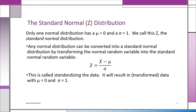Because of that property, you can transform any normal distribution. As long as you know it's a normal distribution, you can transform it to use the z-table using the formula z = (x − μ) / σ. That's called standardizing the data. This way, you never need to use calculus in this course. Instead, you use the template — the z distribution, the standard normal distribution.